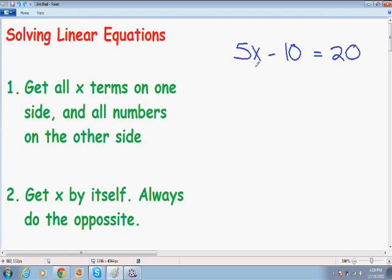In order to do that, we always need to do the opposite. So I want to bring this 10 over to the right side. Since we have a negative 10, we always have to do the opposite. We want to do a plus 10. And whatever you do to one side of the equation, you have to do to the other side of the equation.